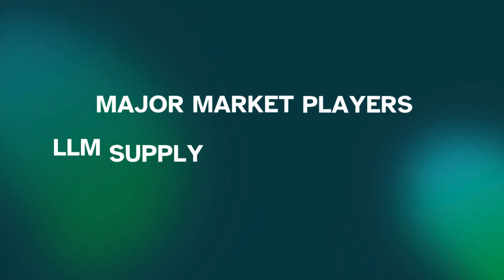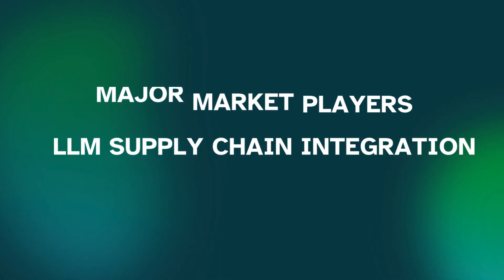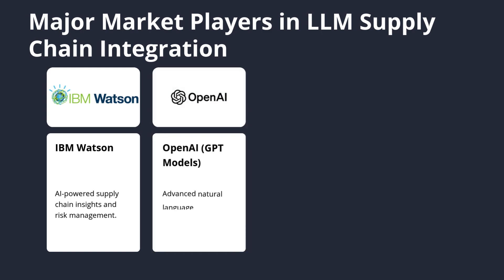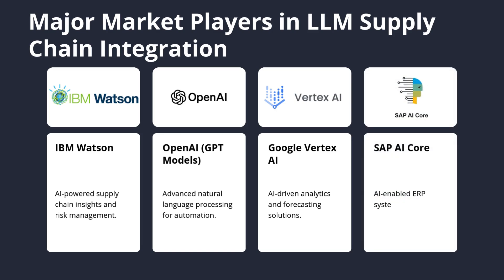Major market players in LLM supply chain integration with their USPs: IBM Watson — AI-powered supply chain insights and risk management; OpenAI GPT models — advanced natural language processing for automation; Google Vertex AI — AI-driven analytics and forecasting solutions; SAP AI Core — AI-enabled ERP systems for intelligent supply chain operations.